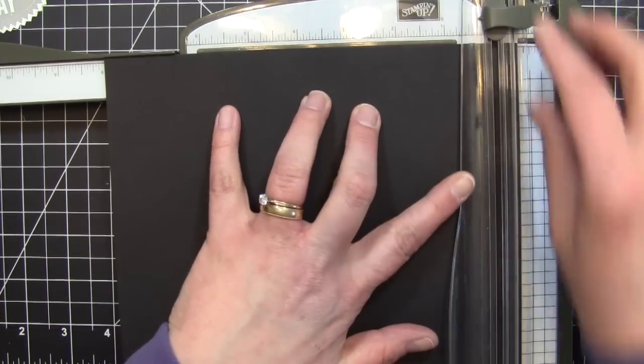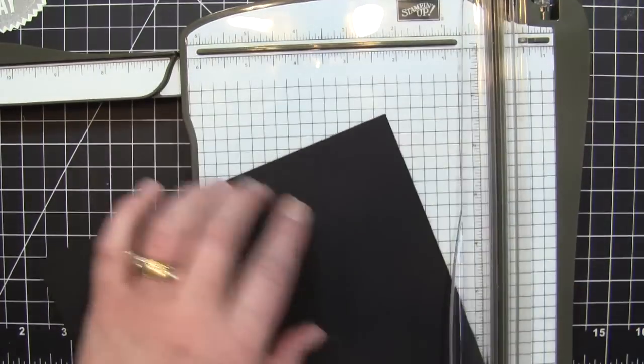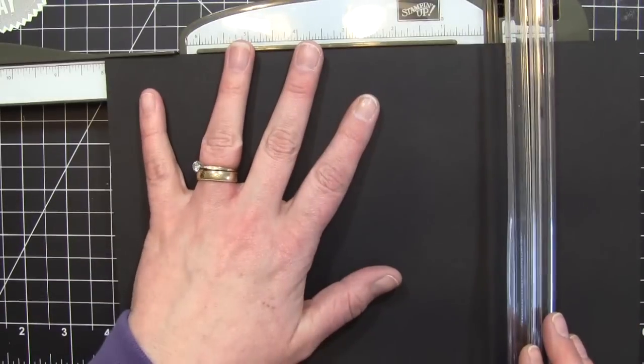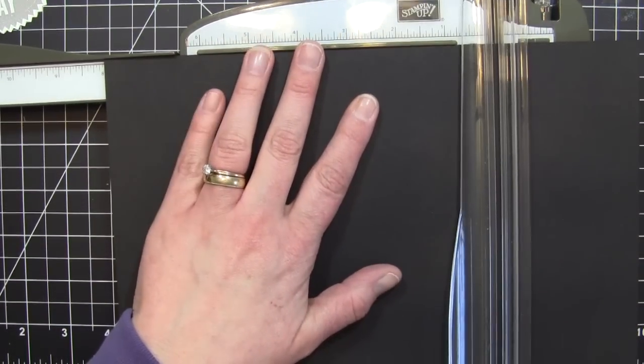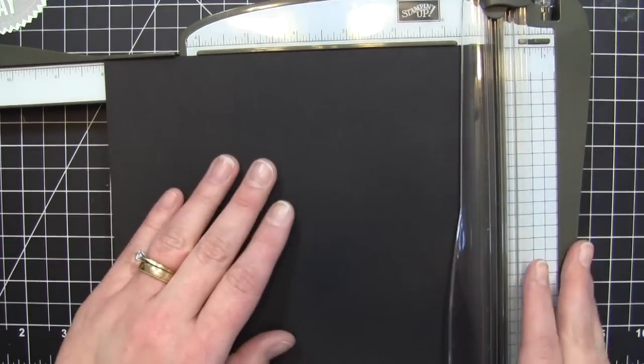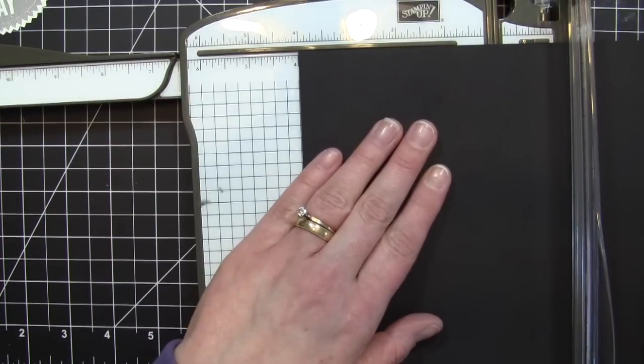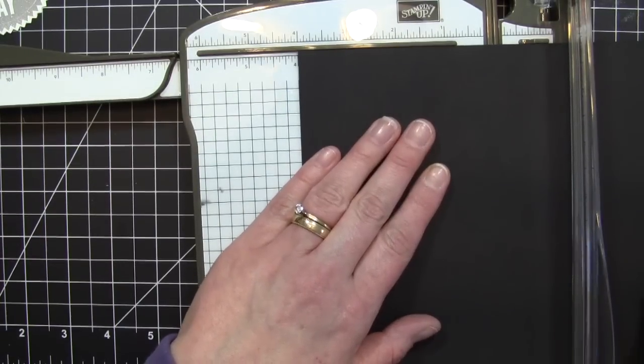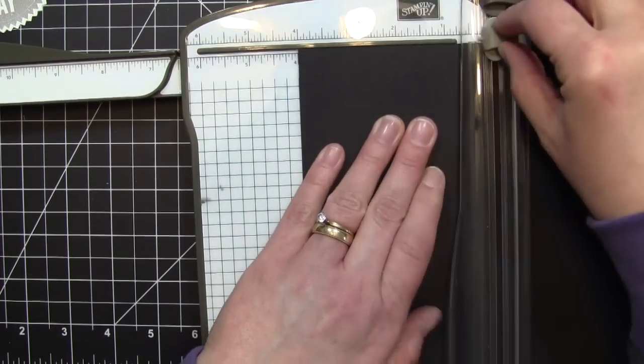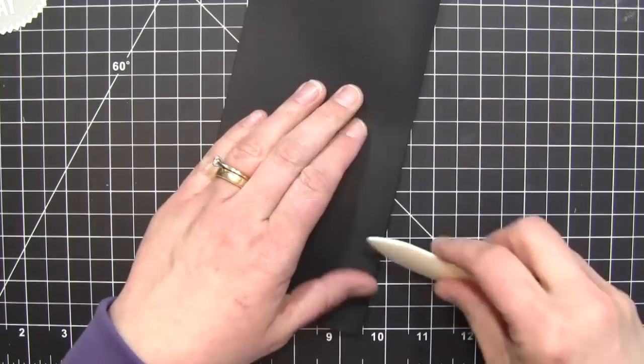Once I have those cut out, I'm taking a piece of black cardstock and using my trimmer to cut this down to eight by eight, then doing a score line at four inches. That's going to create my card base, which will be a four by eight card.